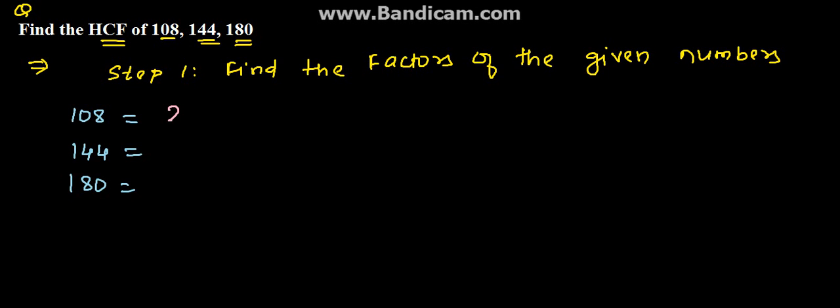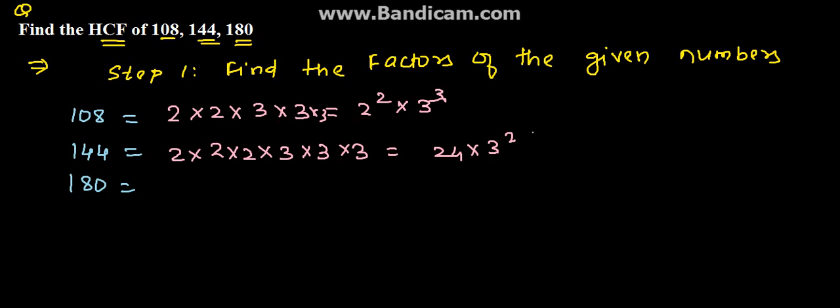108 is 2 into 2 into 3 into 3 into 3, which we can say as 2 square into 3 cube. 144 can be written as 2 into 2 into 2 into 2 into 3 into 3, which is 2 to the 4th into 3 square. While 180 can be written as 2 into 2 into 3 into 3 into 5, or we can say that 2 square into 3 square into 5. So we have factorized these numbers.